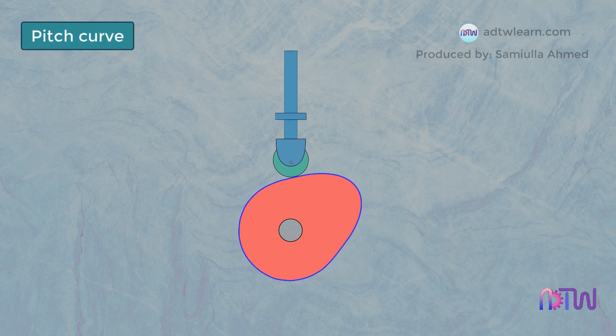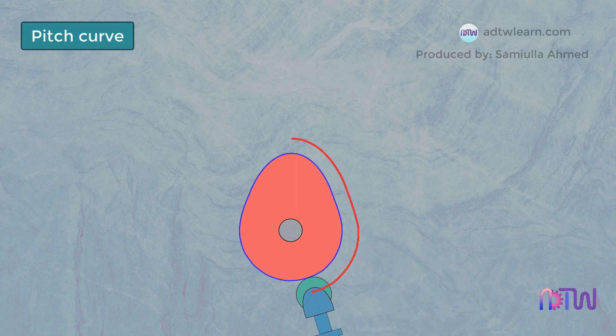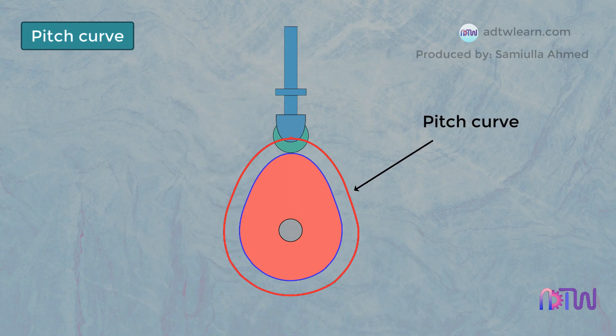Pitch Curve. It is the curve drawn by the trace point, assuming that the cam is fixed and the trace point of the follower rotates around the cam in a clockwise direction. This curve is the pitch curve.